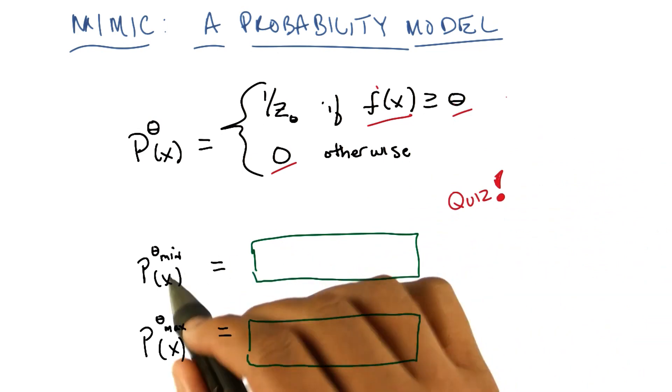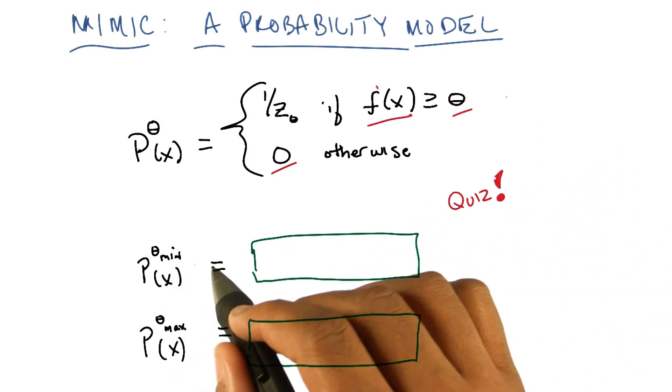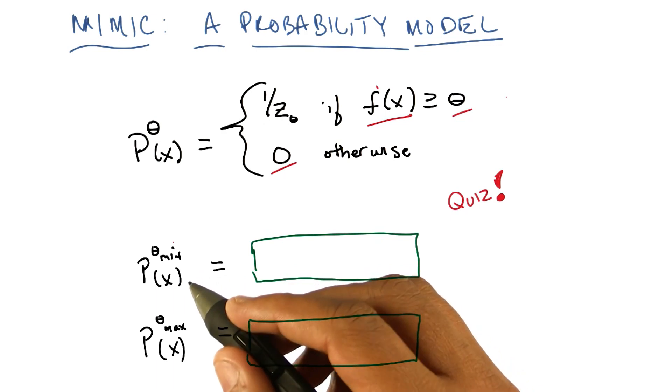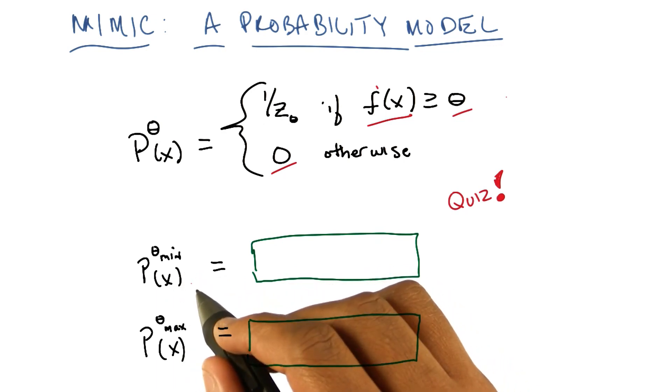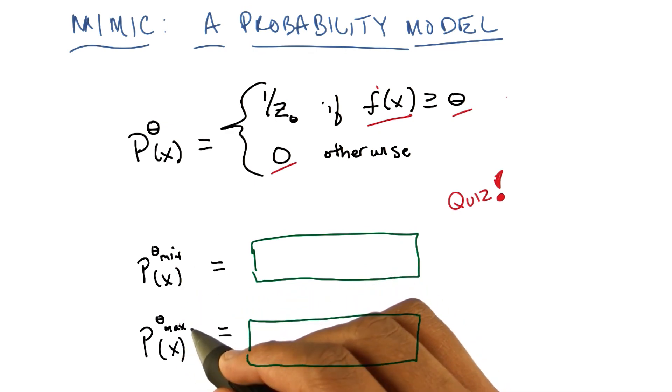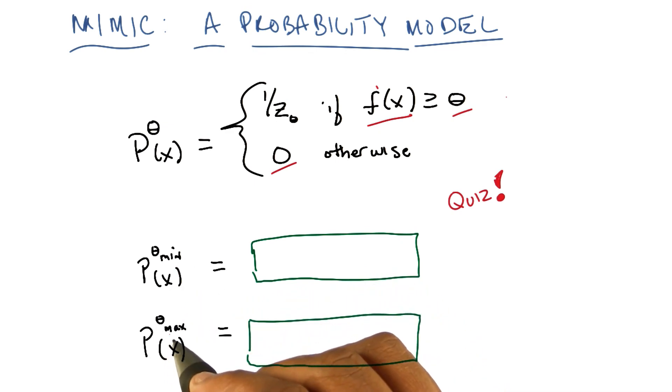And let's call those theta sub min and theta sub max respectively. And so, I want you to describe, in one or two words, p sup theta min of x—that is, the probability distribution where the threshold is its minimum value—and p sup theta max of x, the distribution where theta is at its maximum value. You got it?